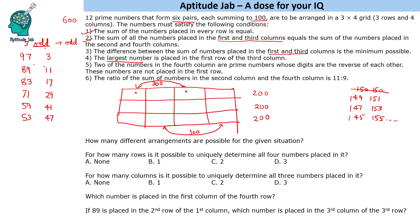The largest number is placed in the first row of the third column, so 97 is placed there. Two of the numbers in the fourth column are prime numbers whose digits are reverses of each other — there is only one such pair: 71 and 17. These two are not placed in the first row, so they appear in the second and third rows of the fourth column.